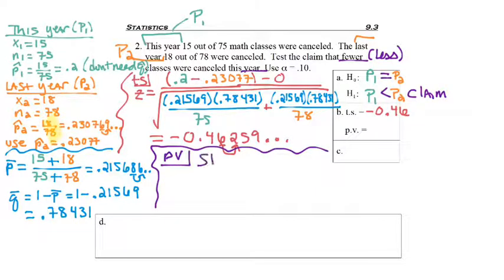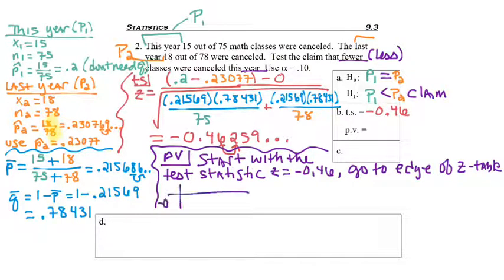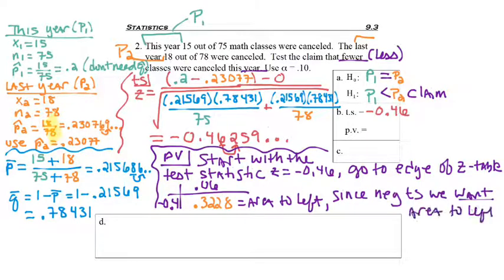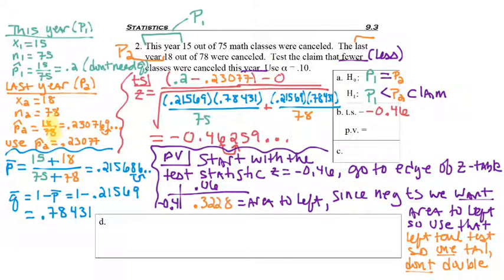Now I'm on to the P-value. We always start with the test statistic. Our test statistic is Z equals negative 0.46. So we go to the edge of the Z table, and row negative 0.4 under column 0.06 gives us 0.3228. Remember that equals area to the left, but since we have a negative test statistic, we want the area to the left, so we're going to use that number. The P-value is the area to your closest edge, and a negative test statistic is on the left side, so area to the left is the closest edge. Also, we had a left tail test, so it's only a one tail test and we will not double the number. Therefore, our P-value is 0.3228.